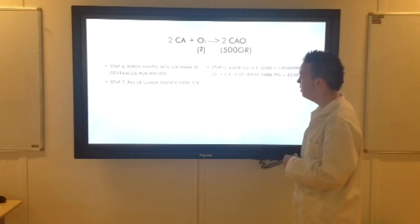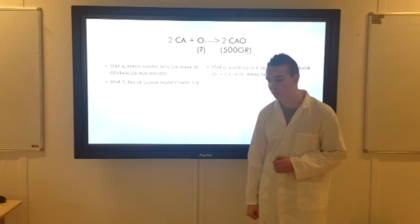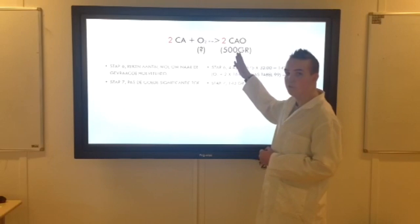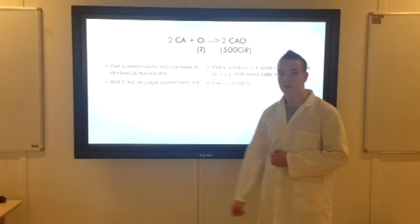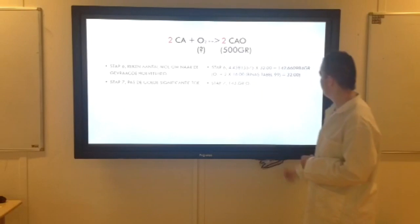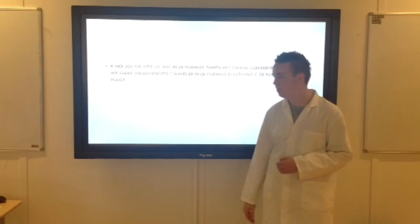Dan krijgen we een mooi antwoord van 142,66. Maar dit moeten we nog eventjes netjes opschrijven. Dat is pas stap 7. Dan gaan we een goede significantie toevoegen. Dat heb ik hier ook gedaan. We weten 500 gram, 3 significaties. Dat heb ik hier ook opgeschreven. 143 gram, even netjes afgerond. Hier hebben we 142,66. 6 is boven de 5, dus dat ronden we af naar boven.